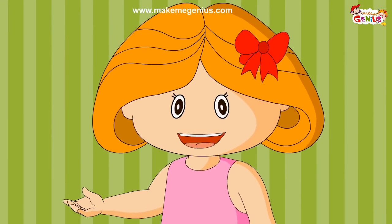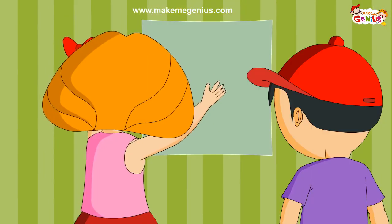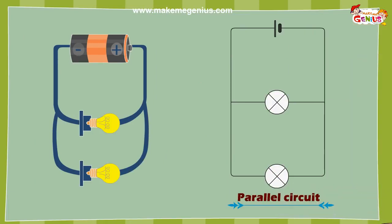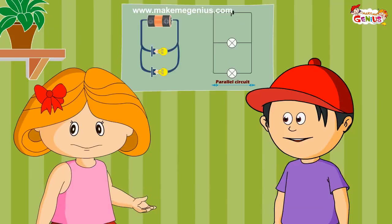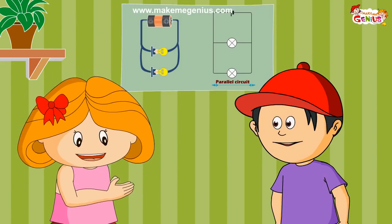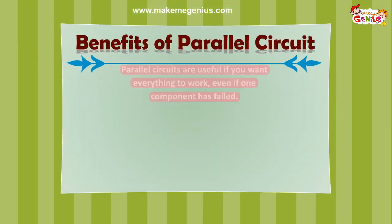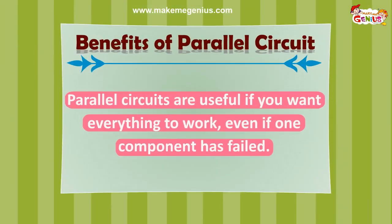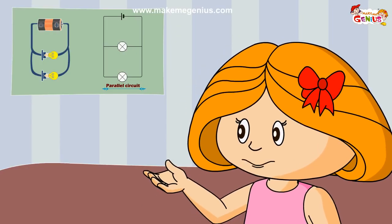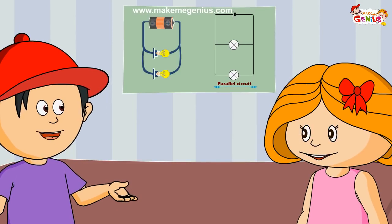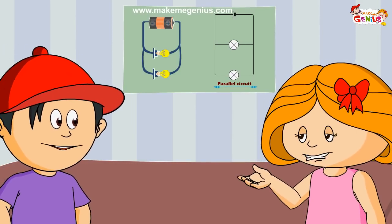Now you have understood parallel circuit. Can you draw it on the chart? Here it is — is it okay? Perfect. Let's clap for your work. Parallel circuits are useful if you want everything to work even if one component has failed. This is why our homes are wired with parallel circuits. So even if one thing goes off, at least other things will continue to work.